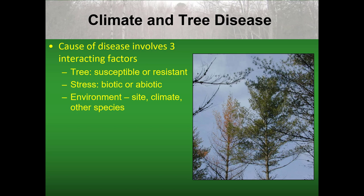I like to think of tree disease as involving three important factors: one, dealing with the tree, whether it's susceptible or resistant; then you have the stress involved, which can be biotic or abiotic; and then you have the environment — the site, the climate, and other species affecting the tree and the stresses.